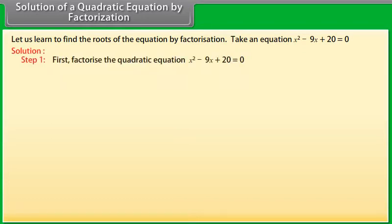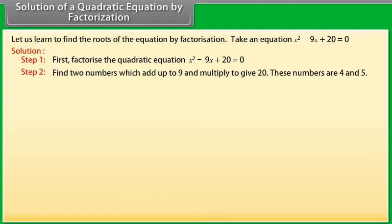Solution: First, factorize the quadratic equation x² - 9x + 20 = 0. Find two numbers which add up to 9 and multiply to give 20. These numbers are 4 and 5. (x - 4)(x - 5) = 0.